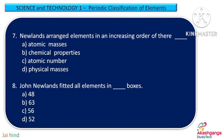Question 7. Newlands arranged elements in an increasing order of their …. Option A: atomic masses, Option B: chemical properties, Option C: atomic number, and Option D: physical masses.